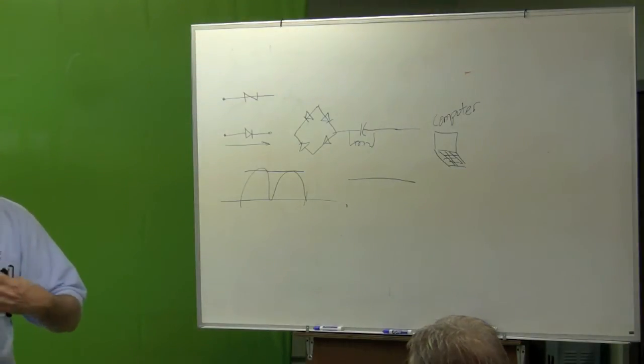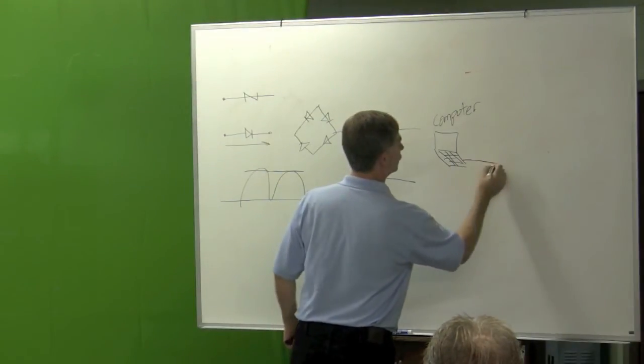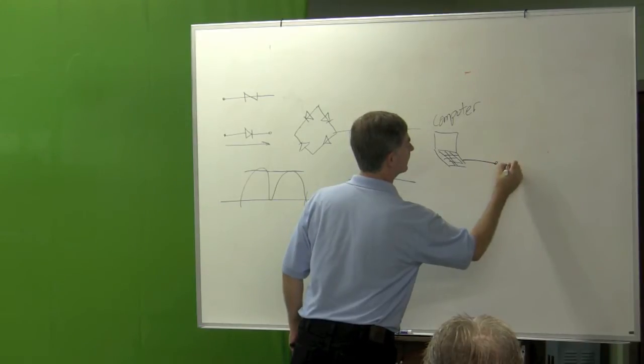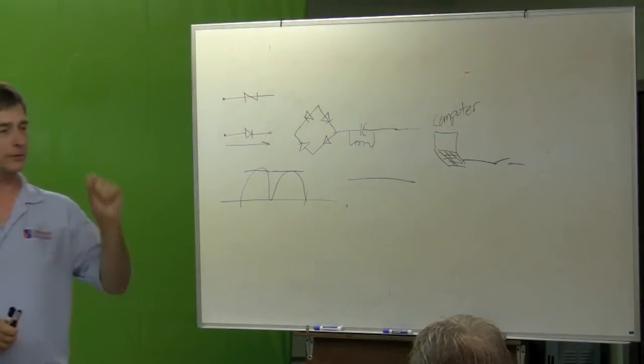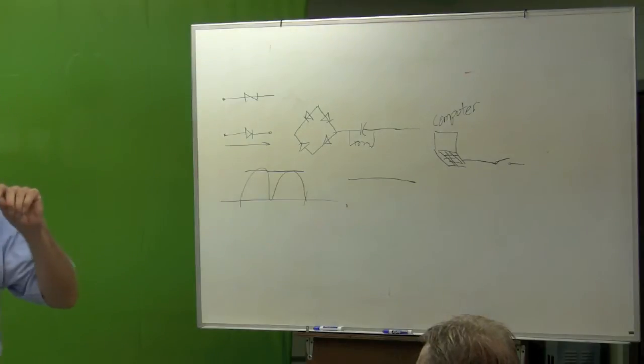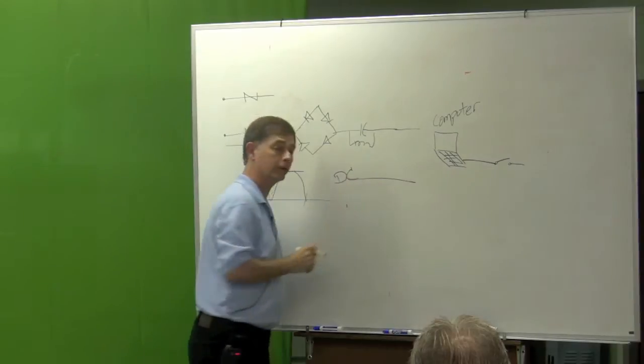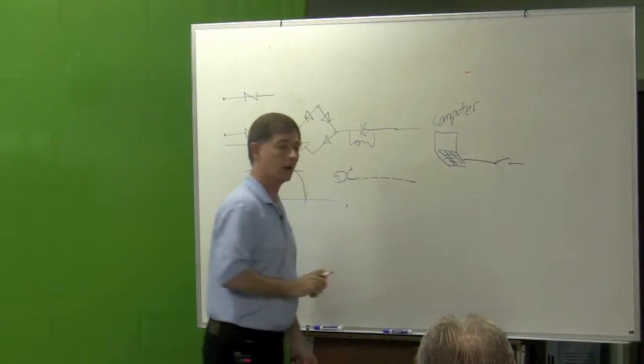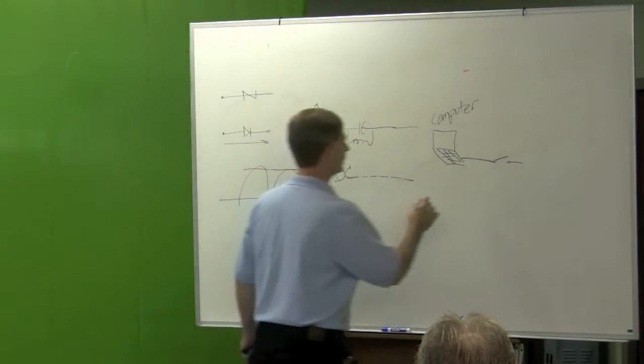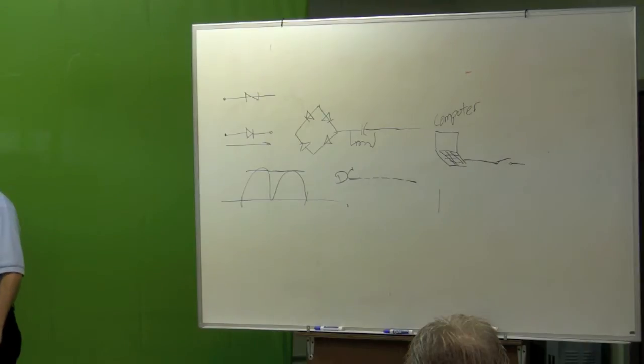The computer just thinks real fast. This computer controls some switches. Very, very fancy and very fast switches. So that computer starts opening and closing a series of switches. So we take this DC voltage here, and we start turning it on and off.